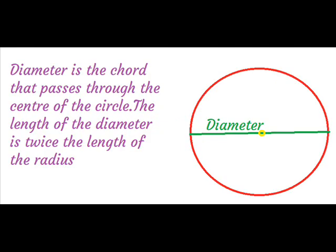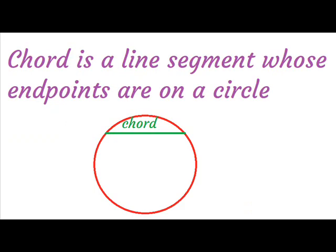The diameter is the chord that passes through the center of the circle. The length of the diameter is twice the length of the radius. A chord is a line segment whose endpoints are on the circle.